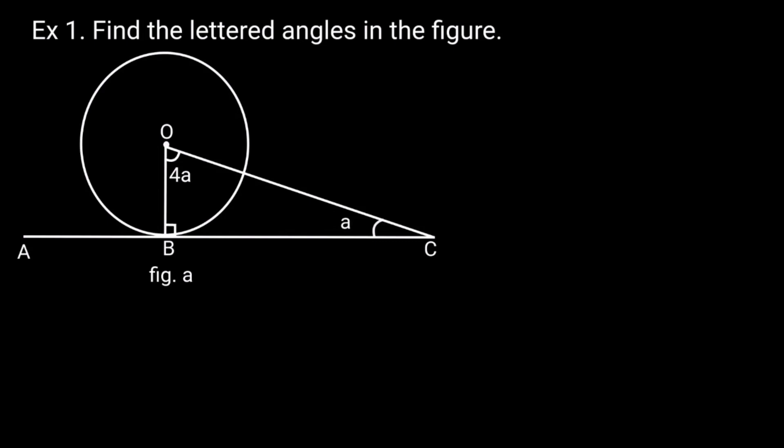Example 1. Find the lettered angles in the figure. Solution. In triangle OBC, angle OBC is equal to 90 degrees. Reason: Angle at the point where the tangent touches the radius is 90 degrees.